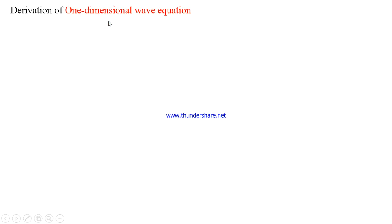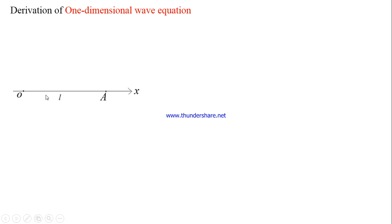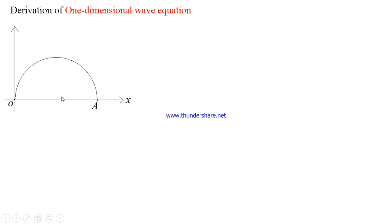To derive this partial differential equation, let us consider an elastic string stretched to length L with its endpoints fixed. We take the endpoints as the origin O and a point A on the positive x-axis. By solving this one-dimensional wave equation we will get U, which gives us the deflection or transverse displacement of the string due to vibration at a point x under time t.